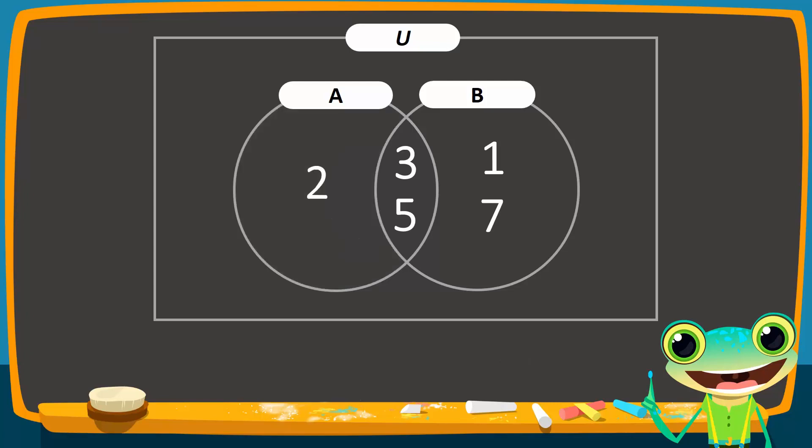Similarly, B difference A contains all the elements of set B that are not in set A. Therefore, we shade the region which contains elements 1 and 7.